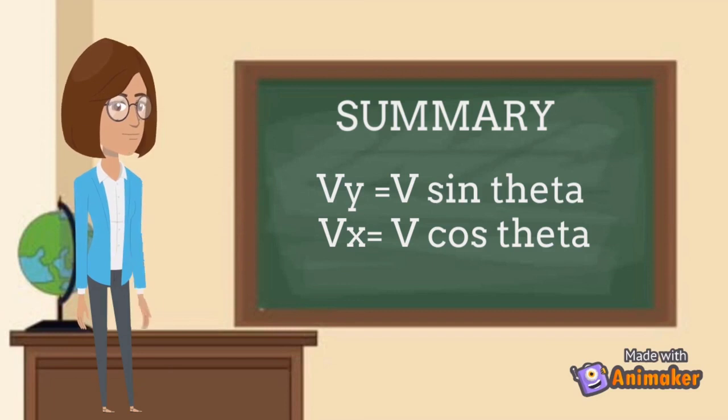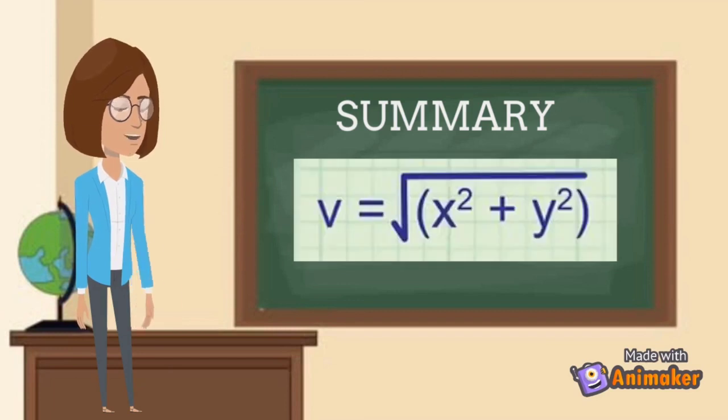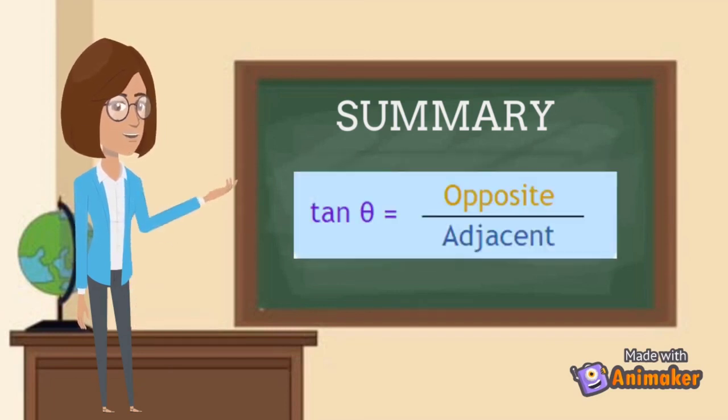Given the components, we can find the magnitude and direction of a vector using the formula.